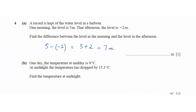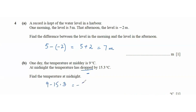Then it says: one day the temperature at midday is 9 degrees Celsius. At midnight, the temperature has dropped by 15.3 degrees. Find the temperature at midnight. Since it says 'dropped', it's going to be minus. So 9 minus 15.3, which is going to be negative 6.3 degrees Celsius.